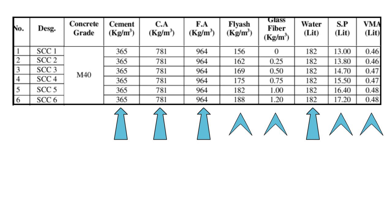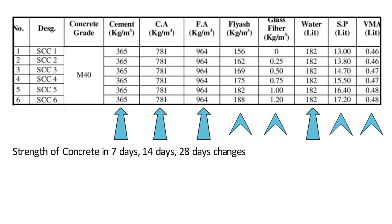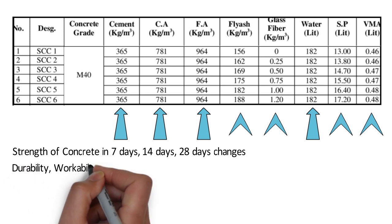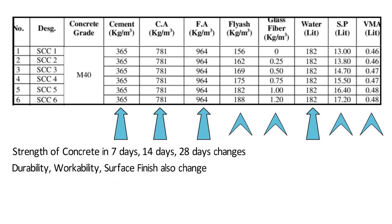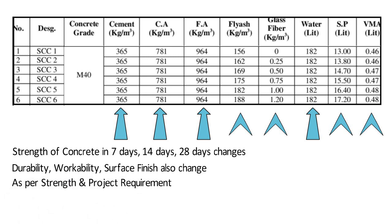Please note: it is not necessary that the quantity of cement, sand, aggregate and water should be constant — it can change in each mix. The strength of concrete cube at 7 days, 14 days and 28 days changes accordingly. Other concrete properties like durability, workability and surface finish also change. So as per strength and project requirements, the correct design mix shall be selected. Also, all the ingredients shown here are on a wet basis.